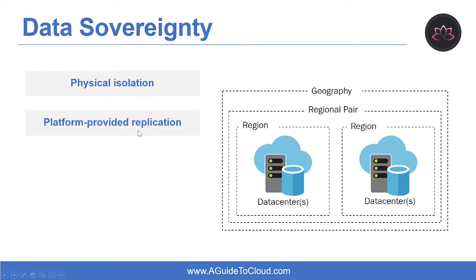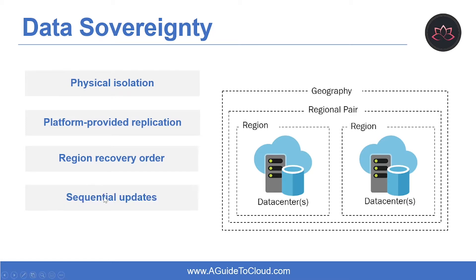The second benefit is platform-provided replication — some services such as geo-redundant storage provide automatic replication to the paired region. The third benefit is region recovery order — in the event of a broad outage, recovery of one region is prioritized out of every pair. The fourth benefit is sequential updates — planned Azure system updates are rolled out to paired regions sequentially, not at the same time.